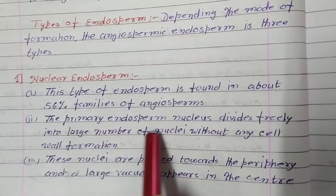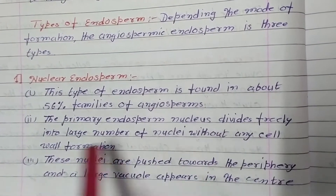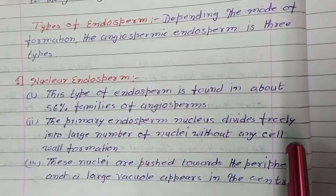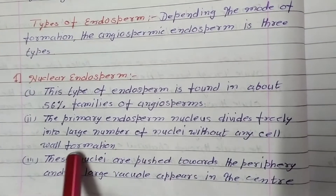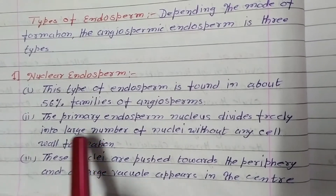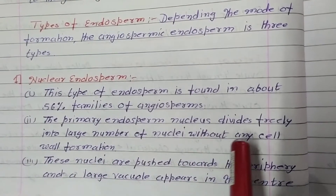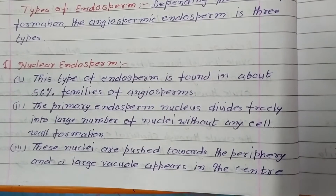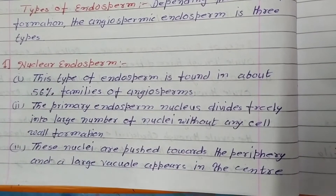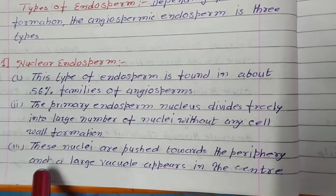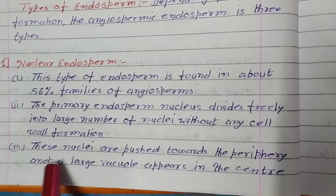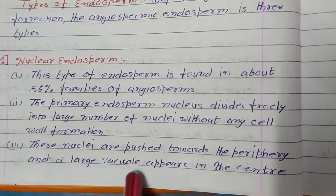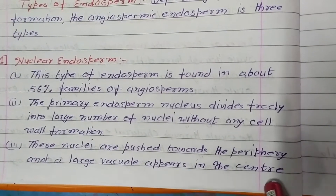In nuclear endosperm, the primary endosperm nucleus divides freely into a large number of nuclei without any cell wall formation. Free nuclear divisions occur, no cell wall is formed, and these nuclei are pushed toward the periphery. Large vacuoles appear in the center.